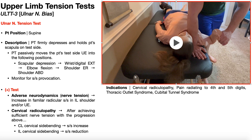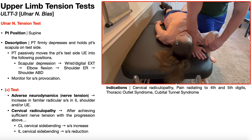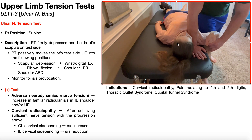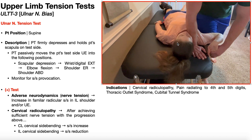The ulnar nerve tension test is the only one of these tests where you'll actually be in elbow flexion. Once I get that wrist and digit extension, I need to make sure the elbow stays relatively flexed. It's already flexed, but I can flex it even more. Then I'm going to induce shoulder external rotation — in this position we're already in some external rotation, but I can give a little bit more.